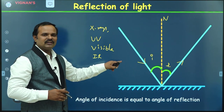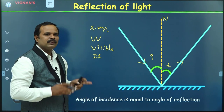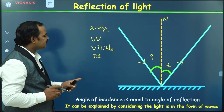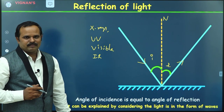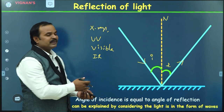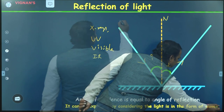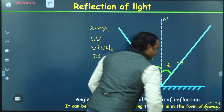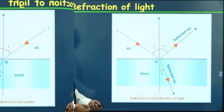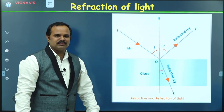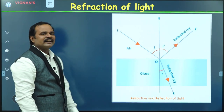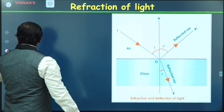When we say the reflection of light, the angle of incidence is equal to the angle of reflection. This property of light can be explained by considering light is in the form of waves. So we can understand that light is behaving like waves here. Let us take another example — another property of light.